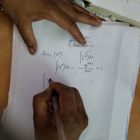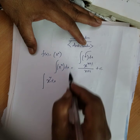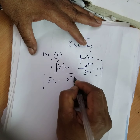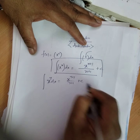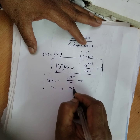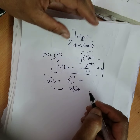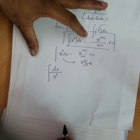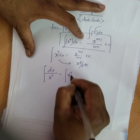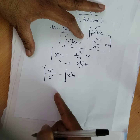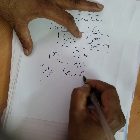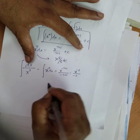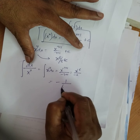For example, x to the power of 7 dx — apply the formula: x to the power of 7 plus 1 divided by 7 plus 1 plus c, which gives x to the power of 8 by 8 plus c. On the other hand, if it is in the denominator, say x to the power of 7 in the denominator, take it to the numerator as x to the minus 7. Applying the formula gives x to the power of minus 6, and therefore minus 1 divided by 6 times x to the power of 6.